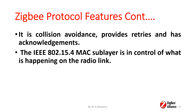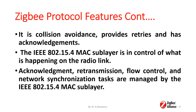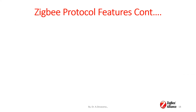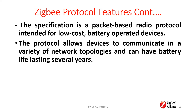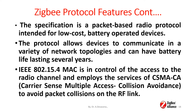The IEEE 802.15.4 MAC sublayer is in control of what is happening on the radio link. The specification is a packet-based radio protocol intended for battery-operated devices. The protocol allows devices to communicate in a variety of network configurations, and battery life can last several years. The IEEE 802.15.4 MAC controls access to the radio channel using CSMA/CA — Carrier Sense Multiple Access with Collision Avoidance — to avoid packet collisions on the radio frequency link.